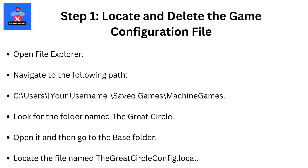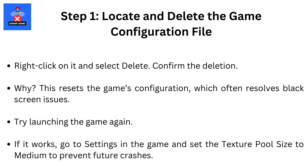Step 1: Locate and delete the Game Configuration File. Open File Explorer and navigate to the following path: C:\Users\your username\Saved Games\Machine Games. Look for the folder named The Great Circle, open it, then go to the Base folder. Locate the file named The Great Circle Config Local, right-click on it, select Delete, and confirm the deletion.